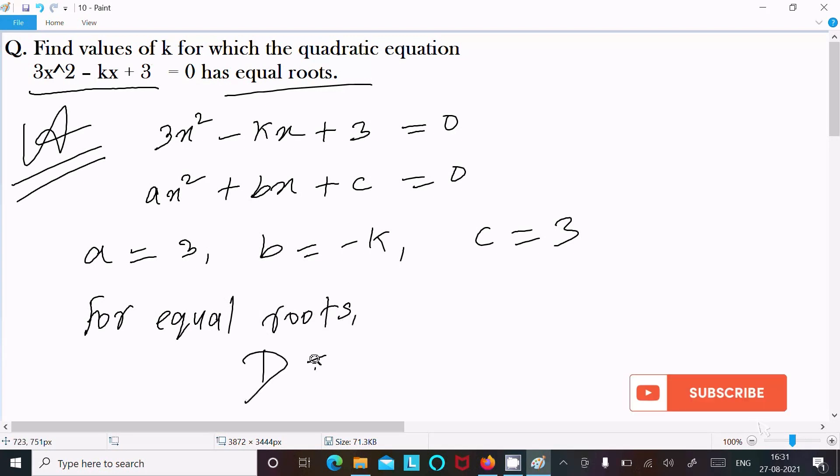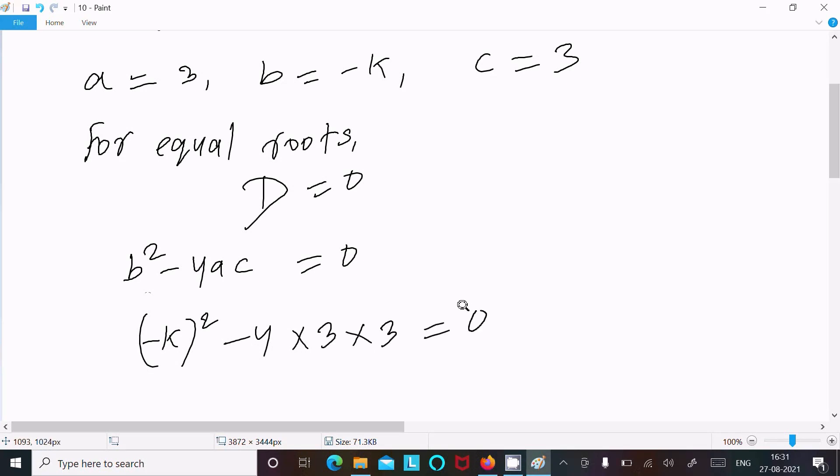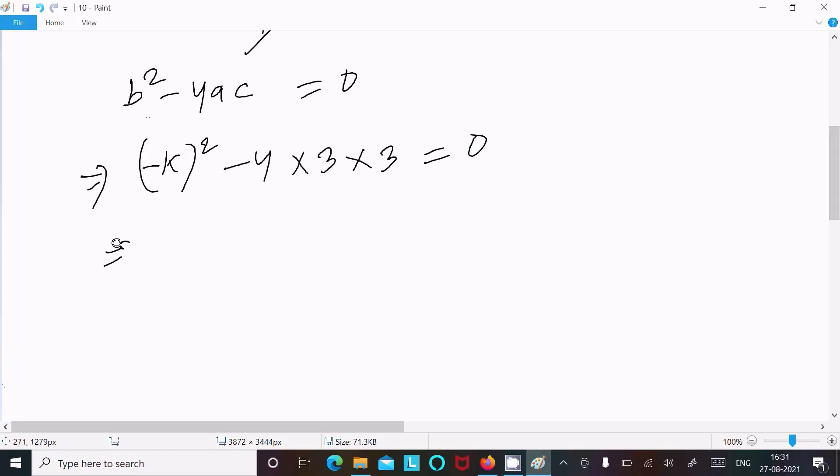So D is b^2 - 4ac = 0. So b^2, which is (-k)^2, minus 4 times a times c, which is 4 × 3 × 3, equals 0. So -k^2, that is k^2, and this multiply: 4 × 3 = 12, 12 × 3 = 36, so k^2 - 36 = 0.